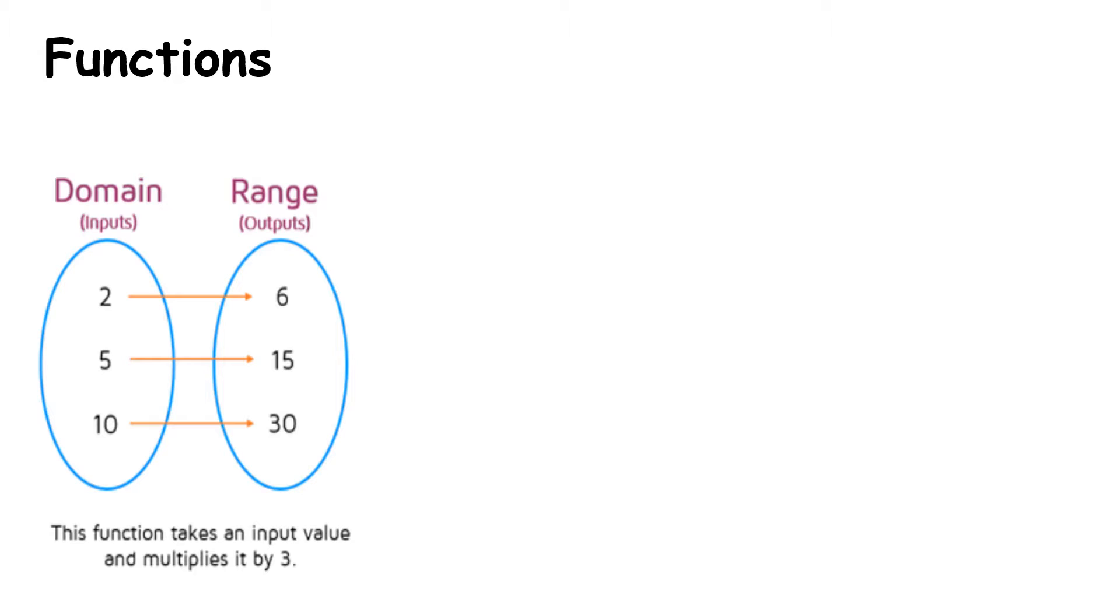Let's take a look at a function. We have here a domain or an input, and it creates output. A function is a rule that creates an output for a given input. In this example, the function is take an input value, so let's take 2, and multiply it by 3, which gives us 6.